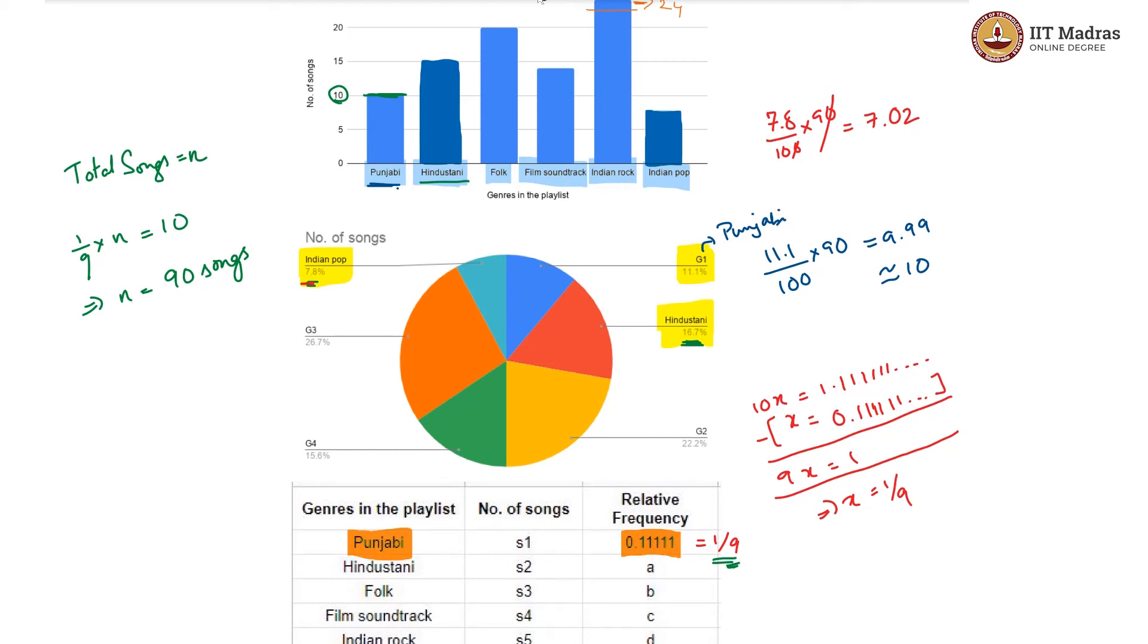Let us look at G2. G2 is twice the percentage of G1. So this must be 20 songs and which has 20 songs here folk. So G2 must be folk.